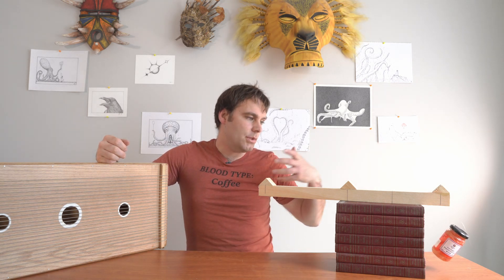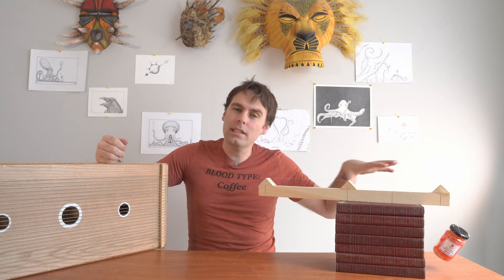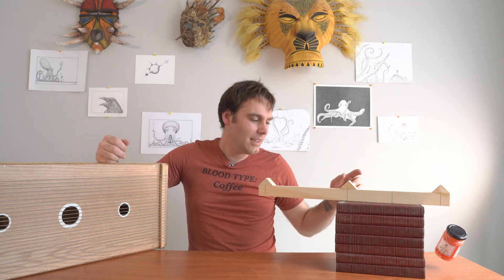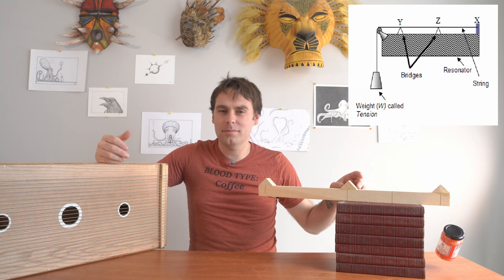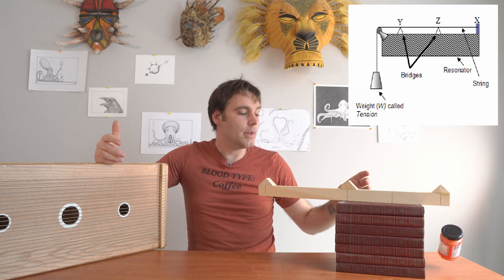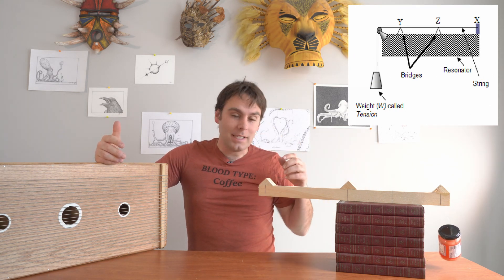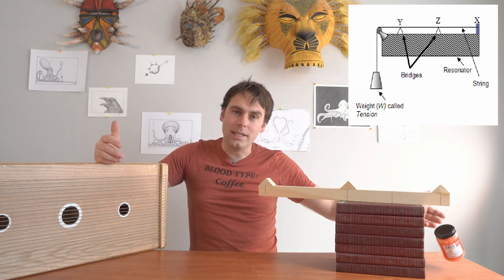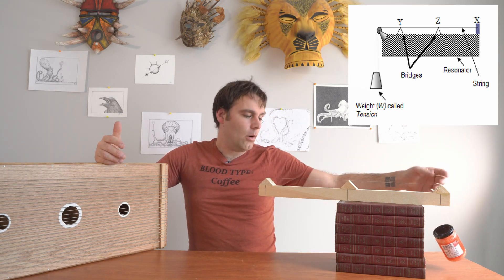He used something which was vaguely similar to this. This is a six dollar, twenty-minute mock-up of one of the original monochords, which is basically just a string with a weight suspended over two bridges.